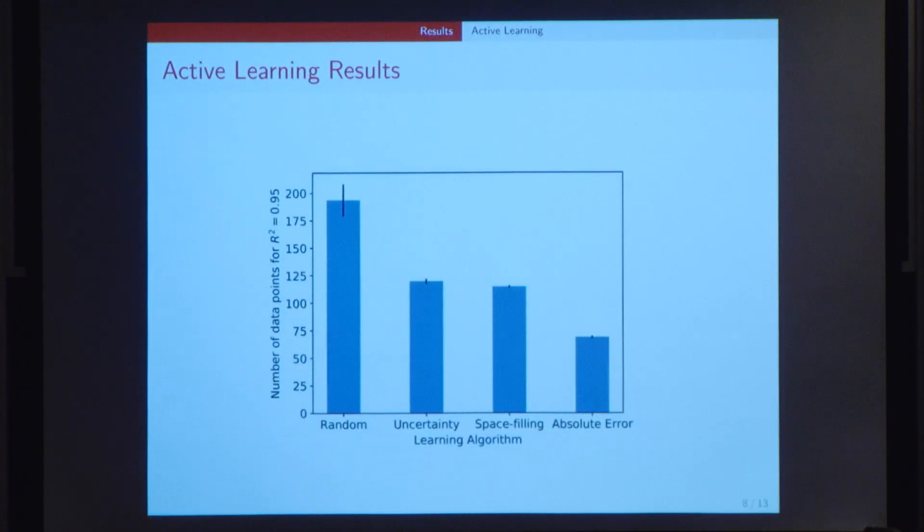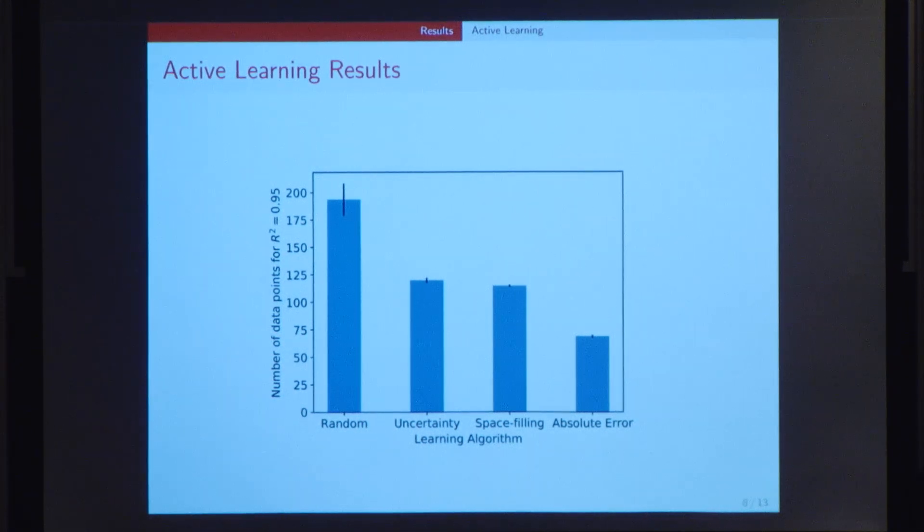Similarly, the next graph shows similar results, where we keep a constant R-square or coefficient of determination value of 0.95 between the true Y values and the predicted Y values. And we can see that both uncertainty and space filling result in a huge reduction in the number of training points required to achieve the same accuracy. This is a really interesting and exciting result for all of us, because it means that in any application in science, we would need a drastically lower number of training examples to obtain the same accuracy.